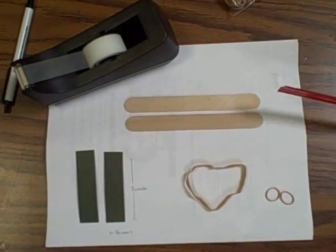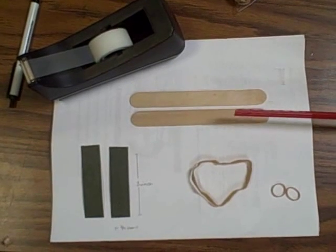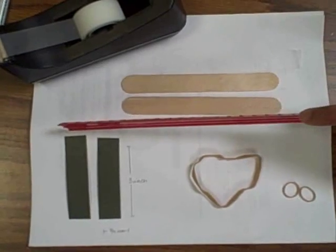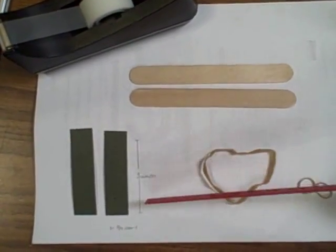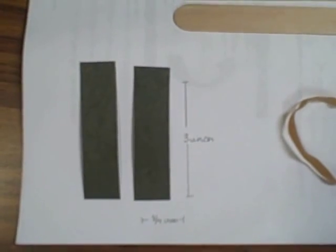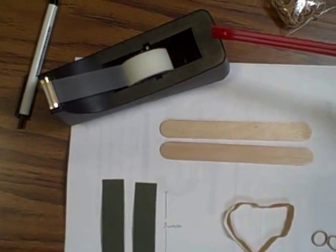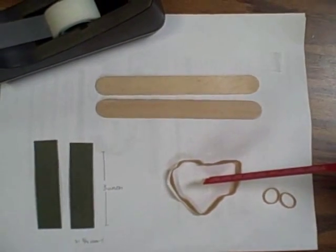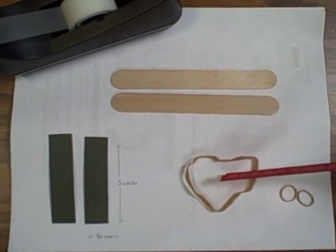To make the tongue depressor harmonica, we need two large craft sticks or tongue depressors, two cardstock strips about three inches long and three quarter inches wide, scotch tape, a long wide rubber band roughly a quarter inch wide by three and a half inches long, and two small rubber bands about one sixteenth inch wide.